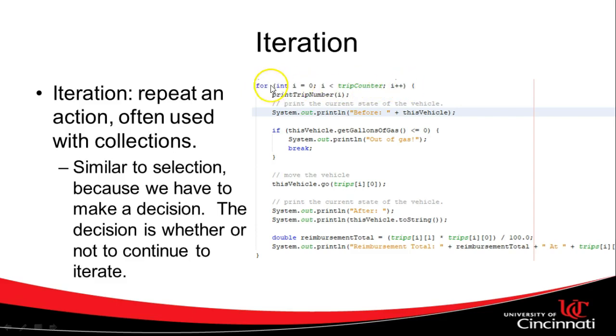But essentially, we have the start of a loop here. It starts with the word for. We have the opening of the block, which is our curly, and the closing of the block down here, and then the sequence of steps that are going to run. We're going to repeat the sequence of steps until the test, i is less than trip counter, no longer executes to true, evaluates to true.